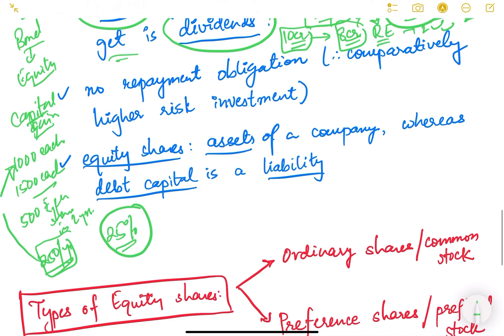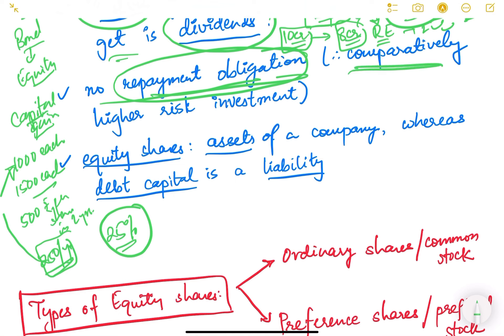The issuers of equity have no repayment obligation. When a company issues shares and the public buys them, the company is not obligated to return that money — people are voluntarily buying shares to become owners. That is also why equity holders have the last claim during liquidation. Therefore, equity is a comparatively high-risk investment compared to debt instruments like bonds and debentures.